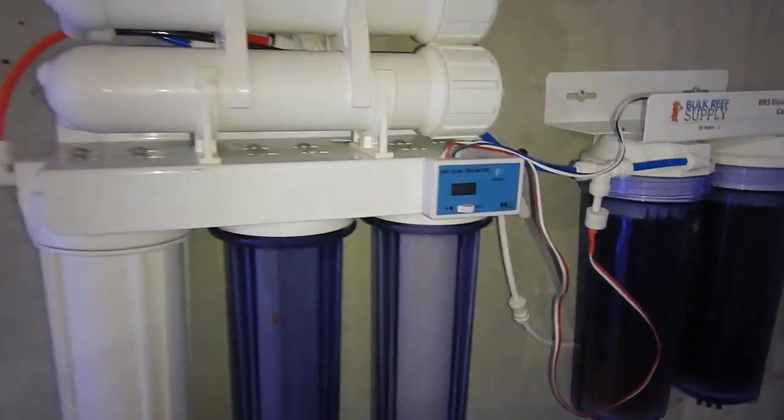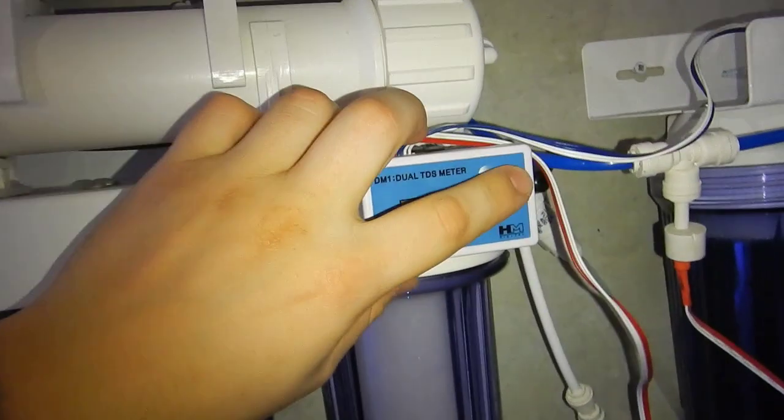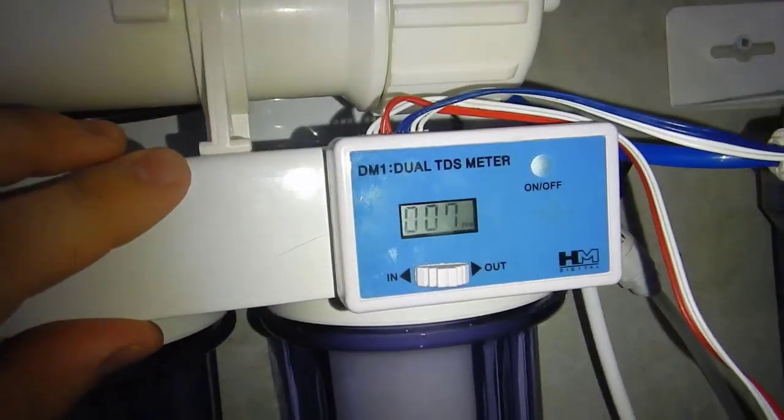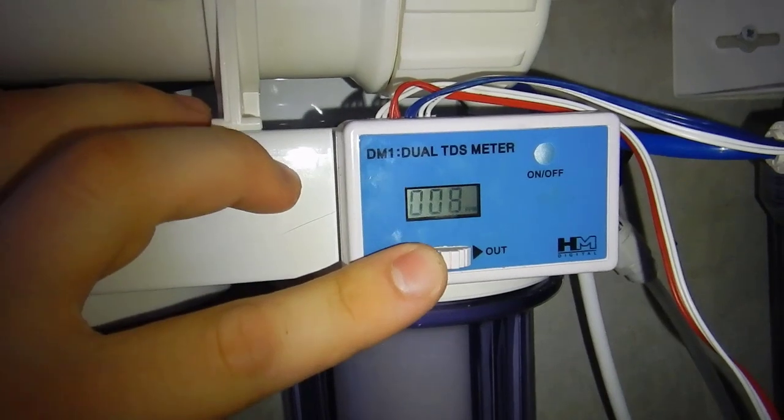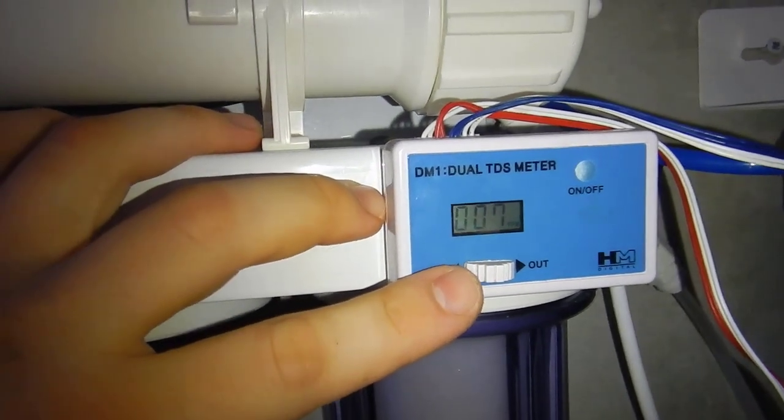I don't know if you can hear if it kicked on or not, but the RODI has kicked on. What we got going here is 8 TDS coming off, 7 TDS. It does go down to about 5 once the system's been on for a little bit, and then of course zero after the membrane. Pretty good psi.